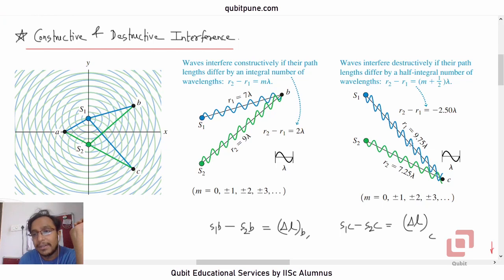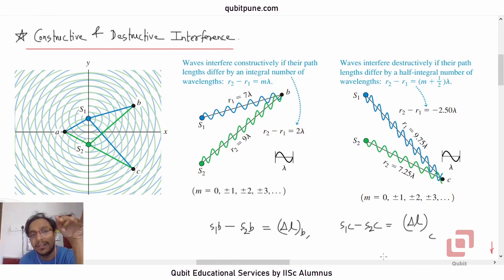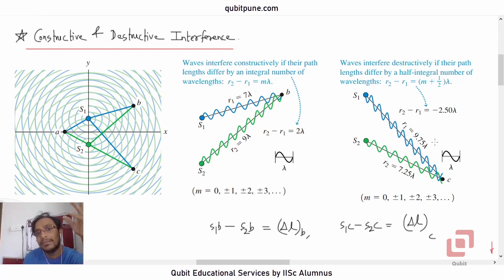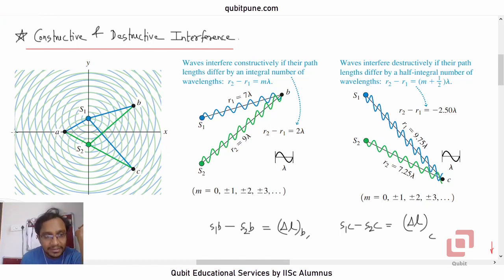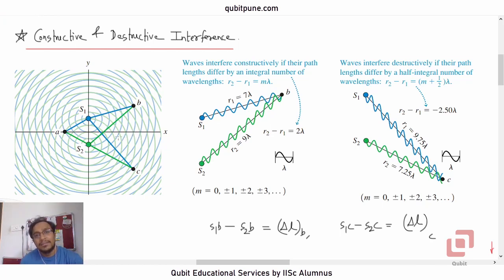When the path difference is an odd multiple of λ/2, the crest of one wave coincides with the trough of the other. If the waves have the same amplitude, you will see total darkness there. Any point on the x-axis for two sources symmetrically distributed about it will always have constructive interference.